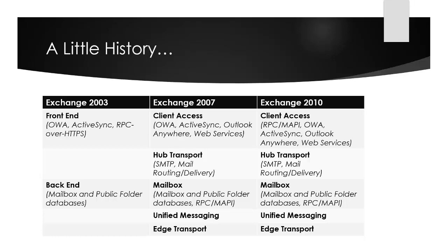The front end server was responsible for client protocols like OWA, Webmail, ActiveSync, and RPC over HTTPS, while the back end was where the mailbox and public folder databases were hosted.